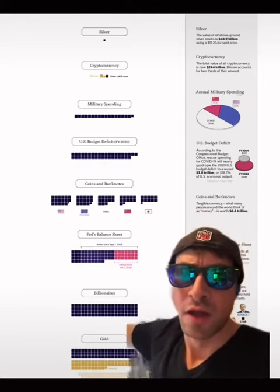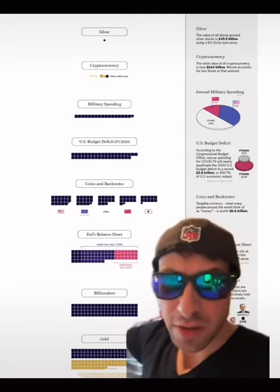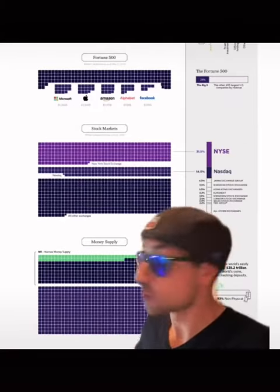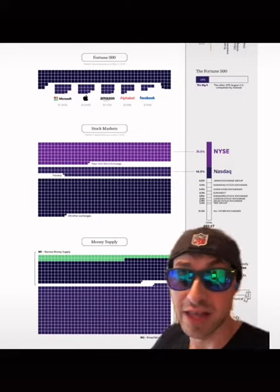So we got US budget deficit, coins and banknotes, Fed's balance sheet, billionaires, gold, Fortune 500. Look, these are massive companies, right? That's a lot of value.